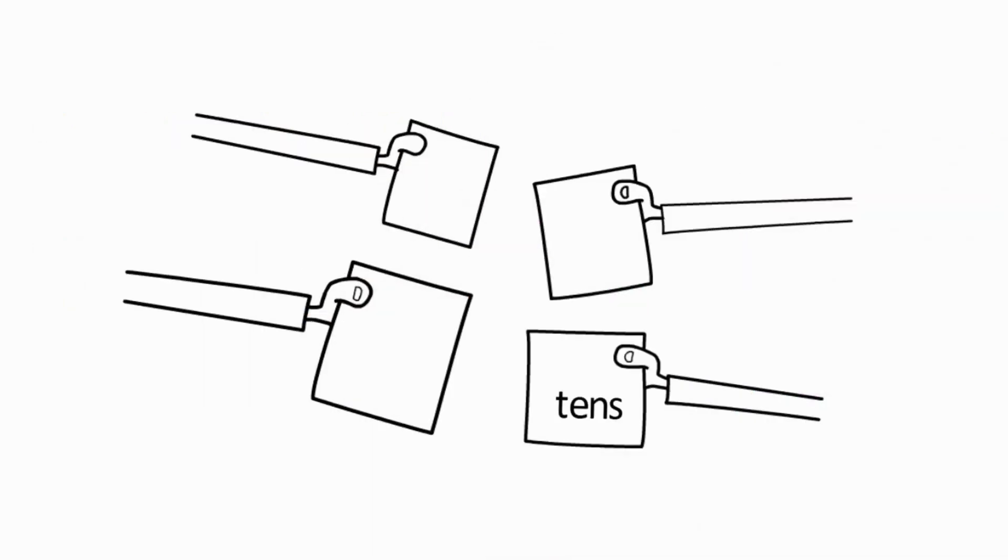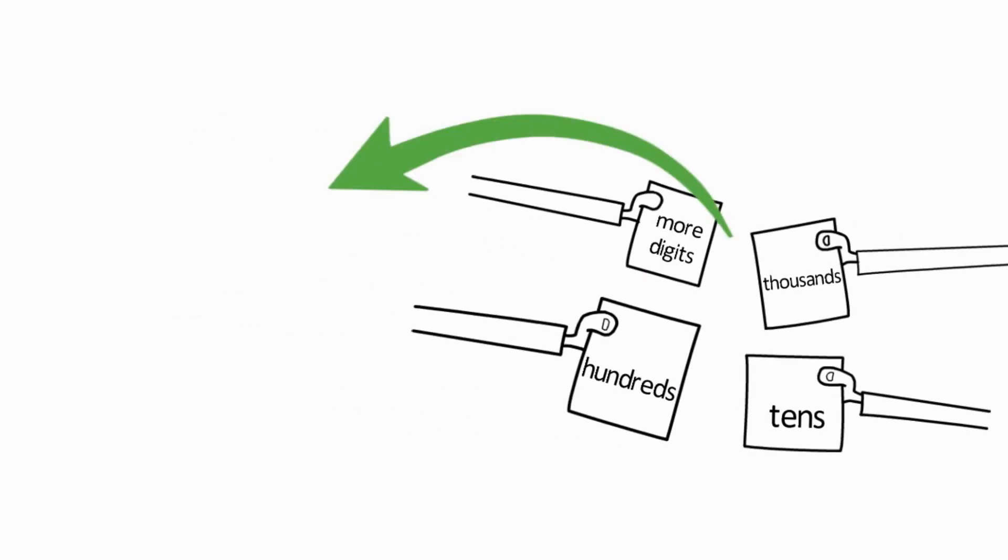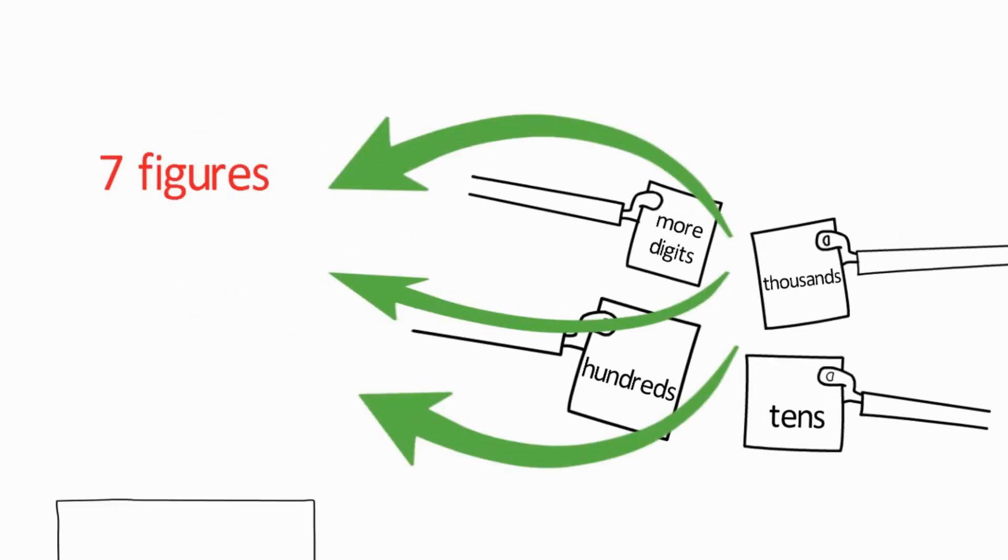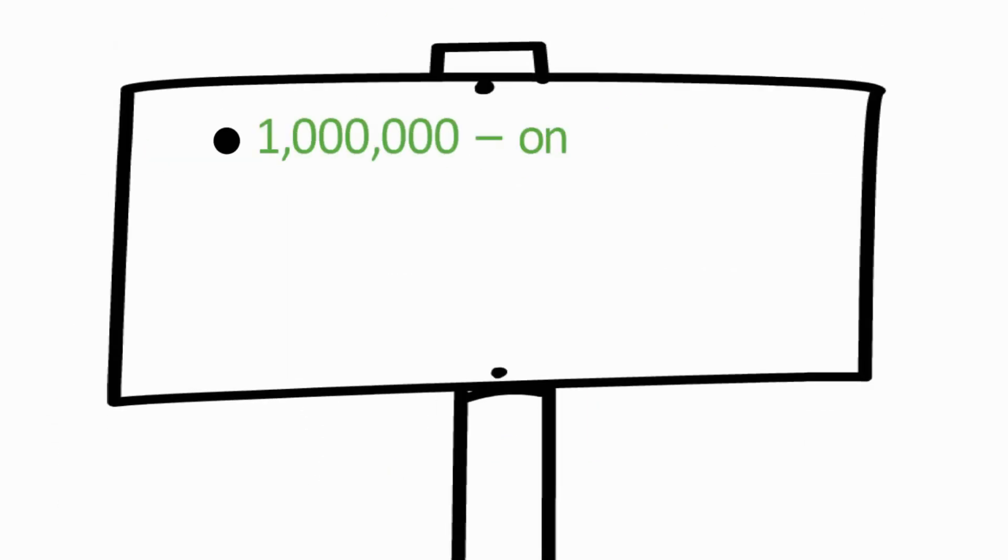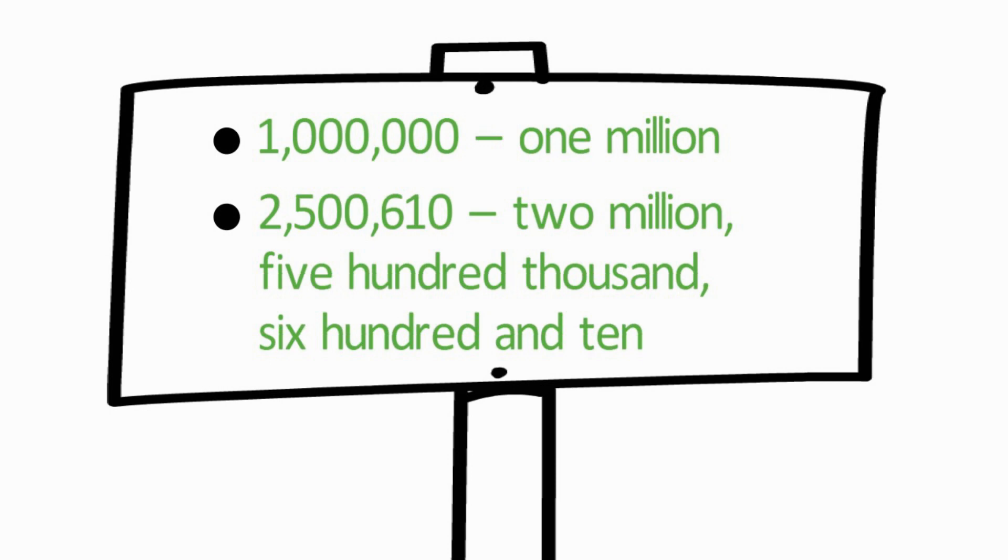When the numbers have tens, hundreds, and thousands, and more digits are added to reach 7 figures, the numbers are in millions. For example, 1,000,000, 2,500,610.